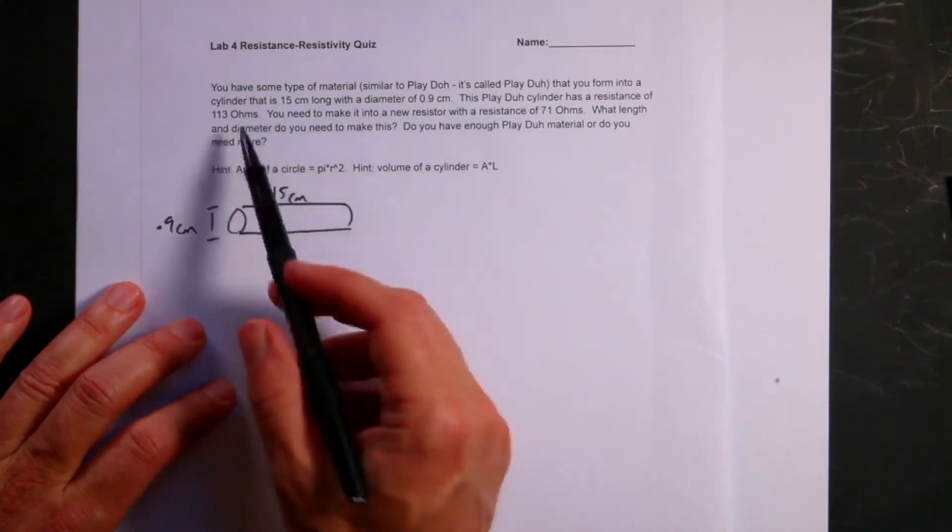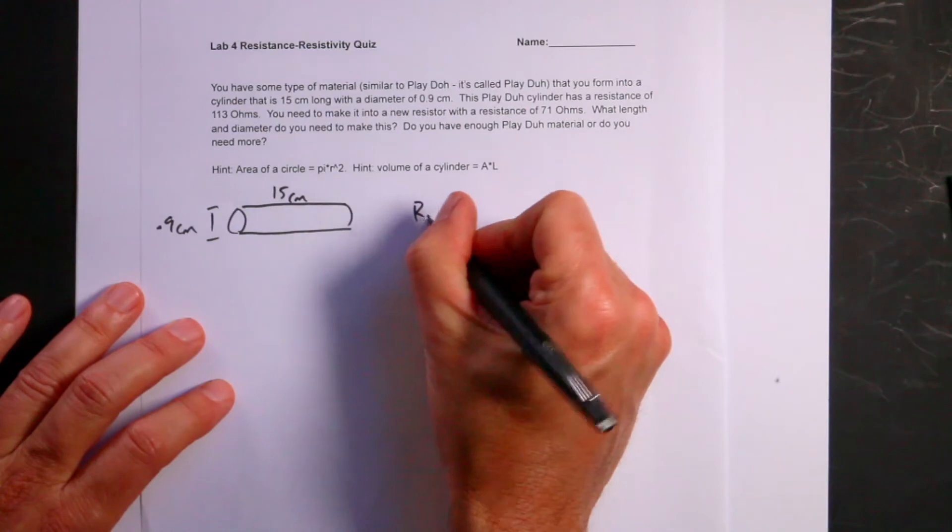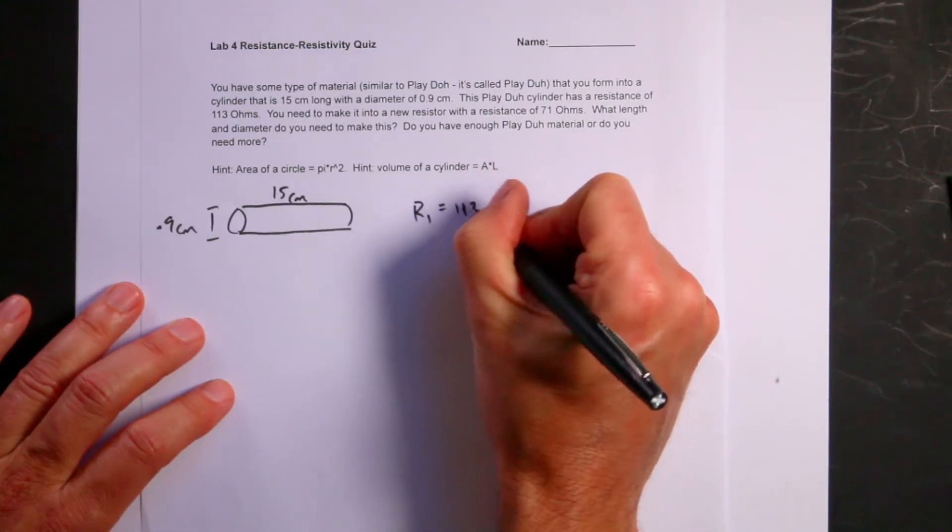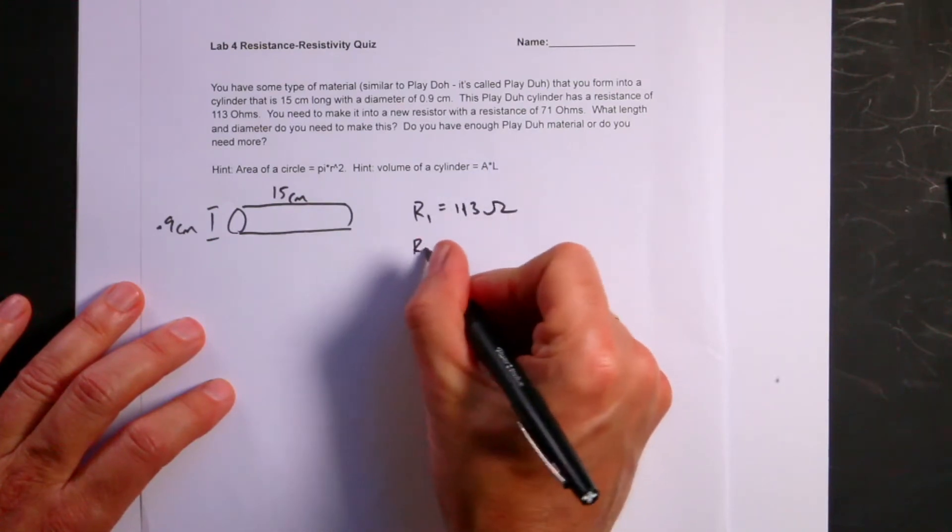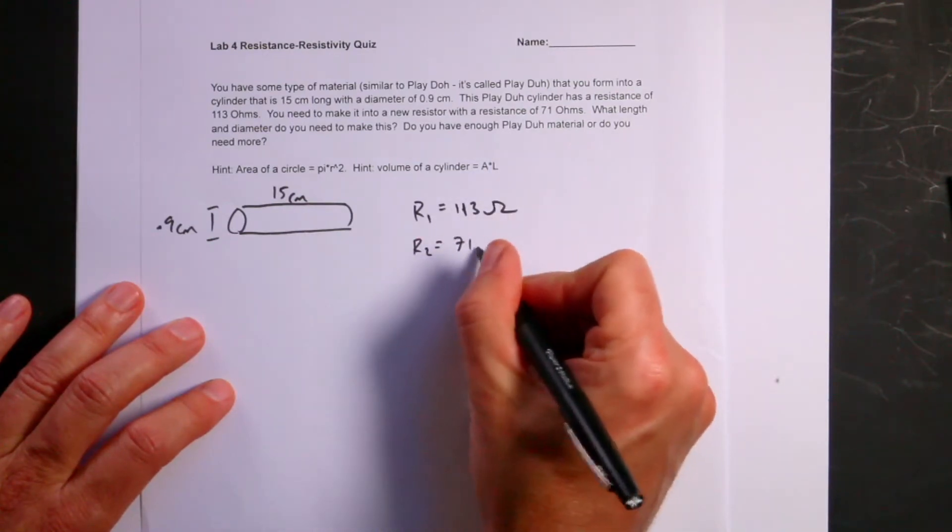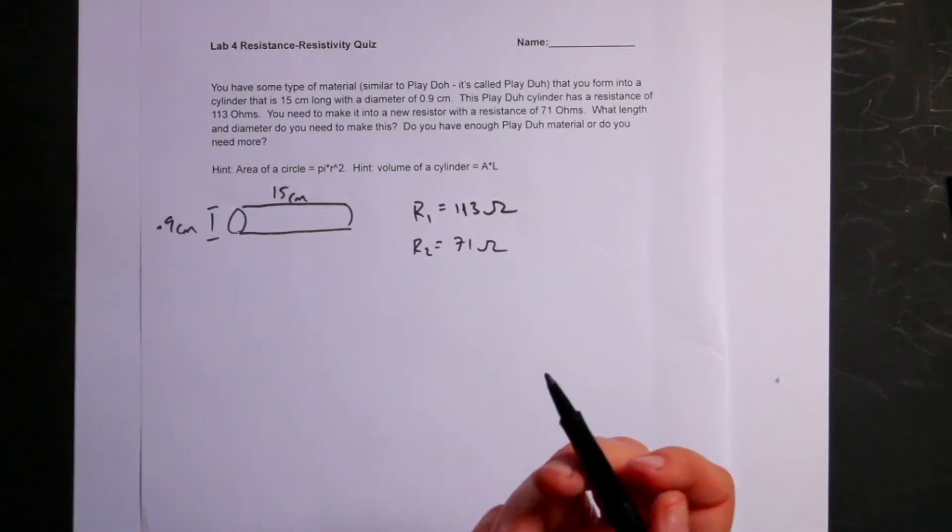The Play-Doh cylinder has a resistance R1 of 113 ohms. I want to make a new resistor R2 that's 71 ohms. So the question is, what do I turn that into?